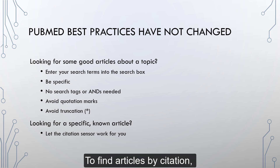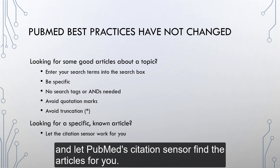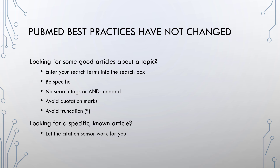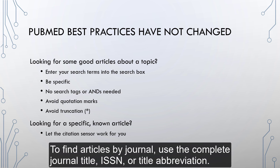To find articles by citation, enter the citation elements you have, such as author, title words, journal, volume, year, and so on, and let PubMed's citation sensor find the articles for you. To find articles by author, search the author's last name and their initials. To find articles by journal, use the complete journal title, ISSN, or title abbreviation.